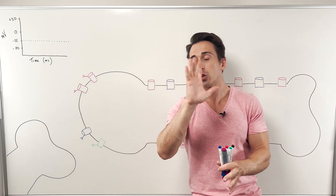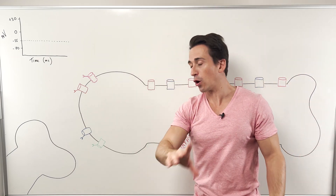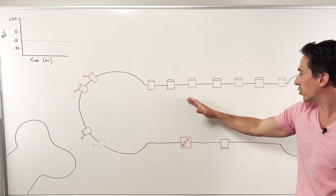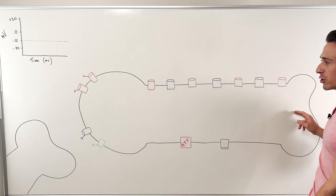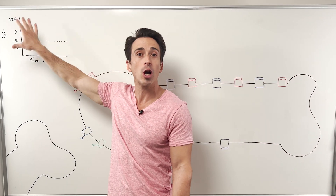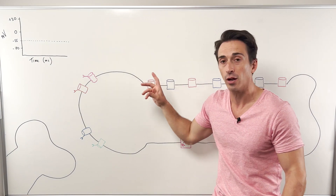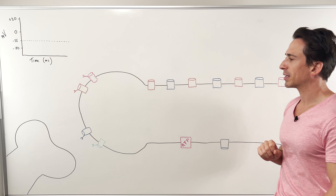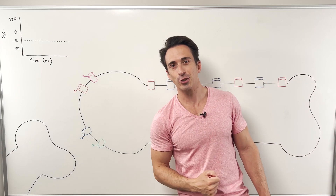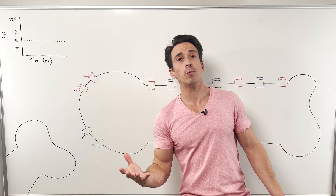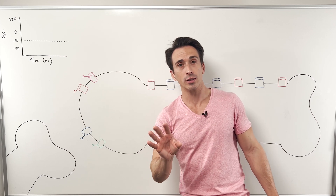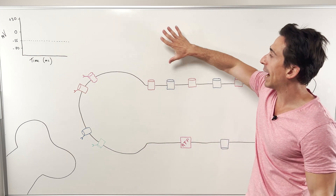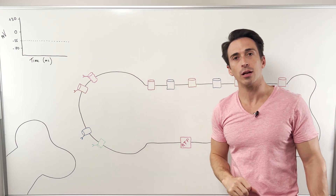Let's first orientate ourselves to what I've drawn up on the board. I've got one neuron here speaking to another neuron, with the axon going all the way down to the axon terminal. We've got a graph here that's going to show us what's happening inside and outside of this neuron, and a whole bunch of different channels that we need to understand in order to understand an action potential. We need to begin with an understanding of ions — the charged atoms or elements — and the fact that they're differently distributed from outside to inside of a neuron.